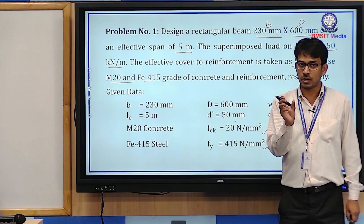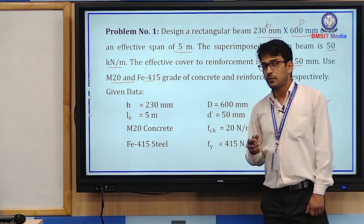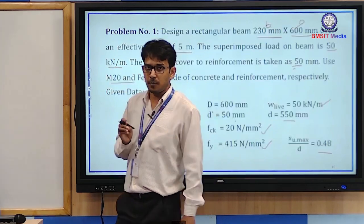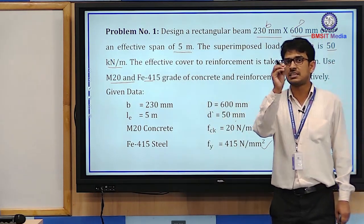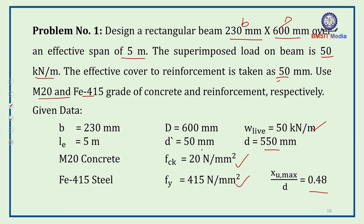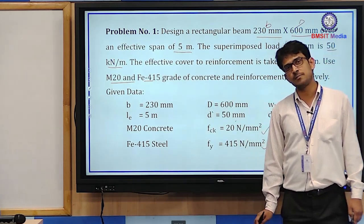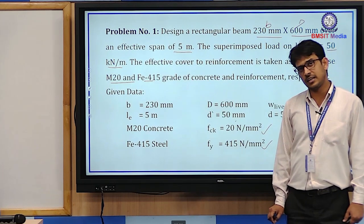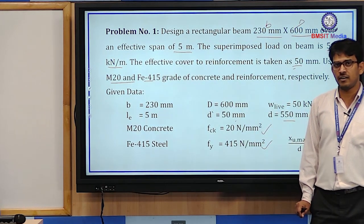Step 1: Calculate ultimate moment. First, calculate self-weight = 25 × 0.23 × 0.6 = 3.45 kN/m. Total load w = 3.45 + 50 = 53.45 kN/m. The beam type is not defined in the question — when data is missing, mention your assumption. Here, assuming a simply supported beam, so maximum bending moment M = wL²/8.